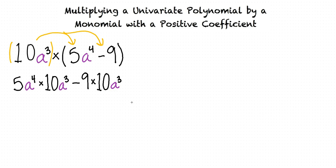We can use the commutative property of multiplication to rewrite this as 5 times 10 times a to the fourth power times a cubed minus 9 times 10 times a cubed,